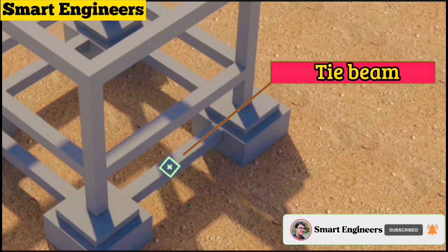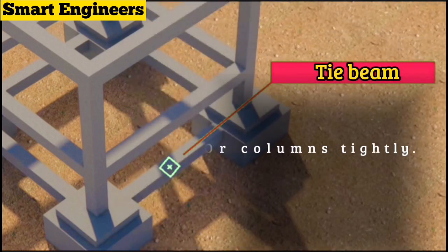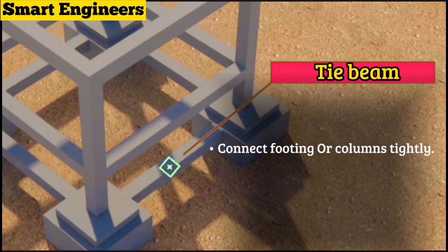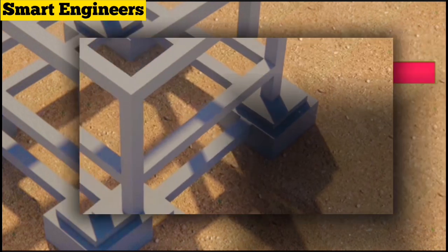What is tie beam and why is it provided in construction work? Tie beams connect and fasten footing or columns to each other tightly. We can also say tie beams keep the spread footing in their position during seismic events. It also serves as strip footing to support interior or exterior walls.